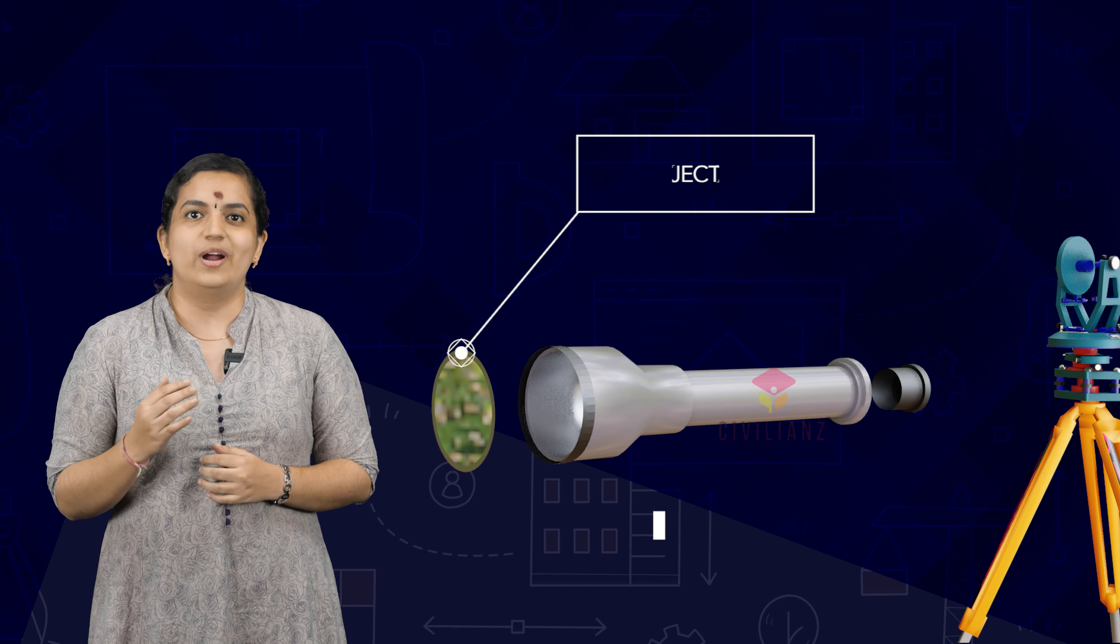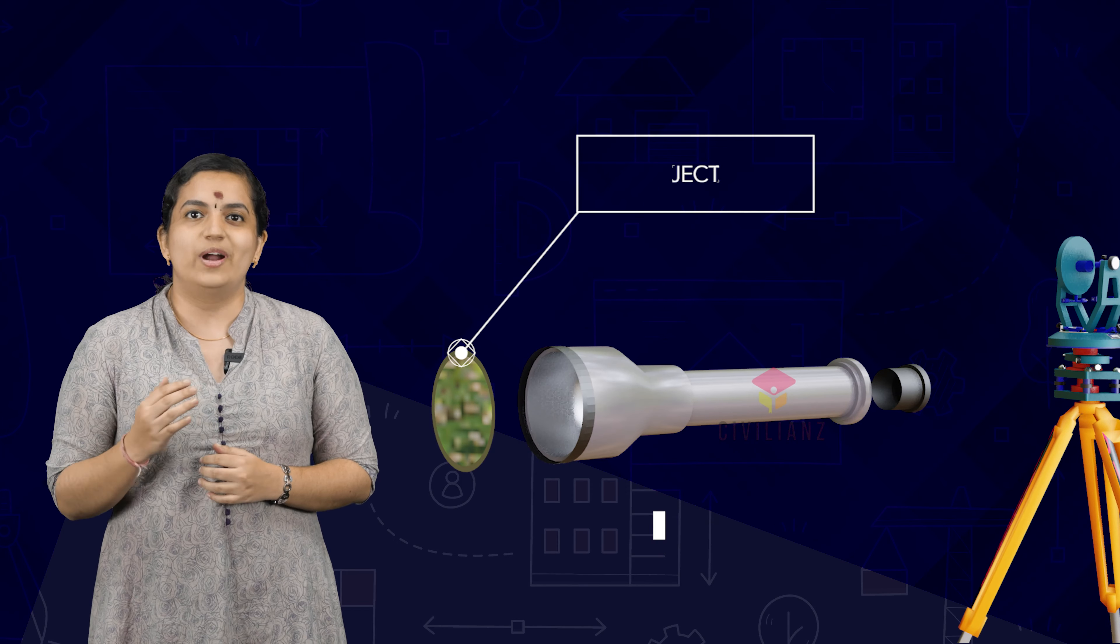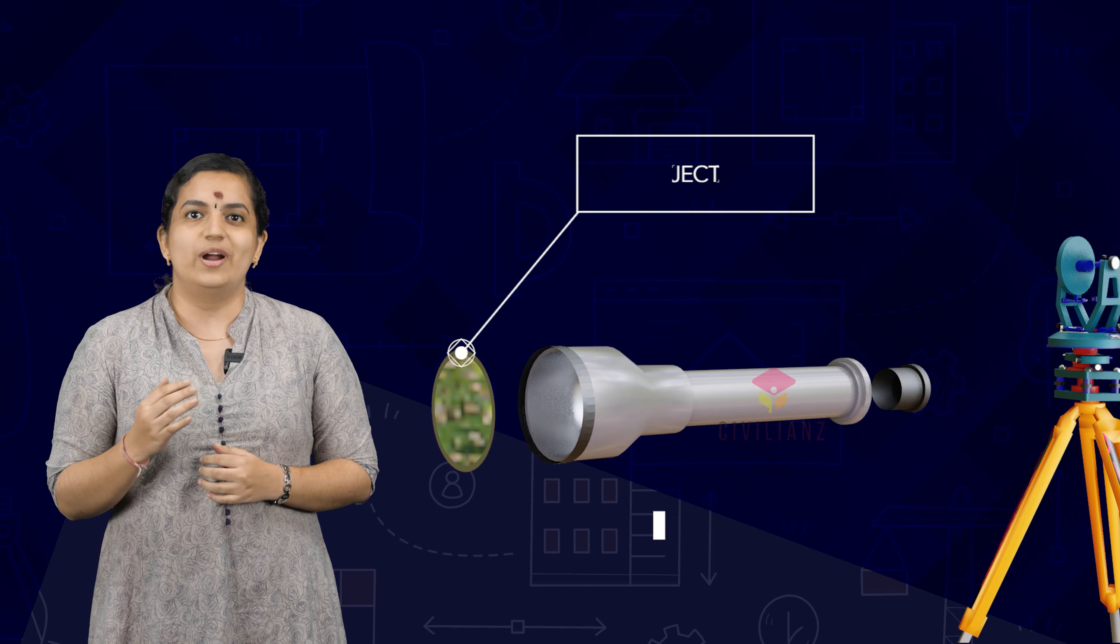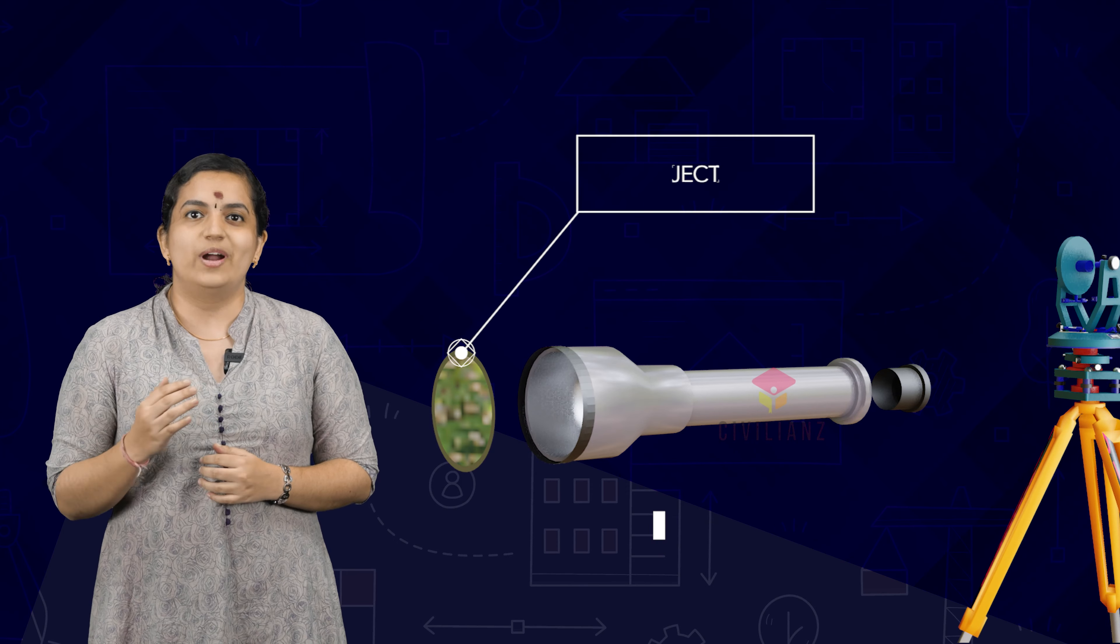The telescope has two lenses basically—one objective and another eyepiece. The objective is used for sighting the objects, and the eyepiece is focused for the distinct vision of crosshairs so that the sighting process becomes proper.